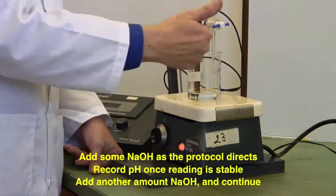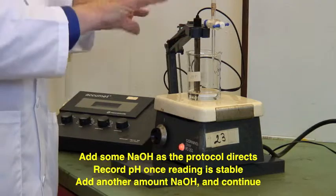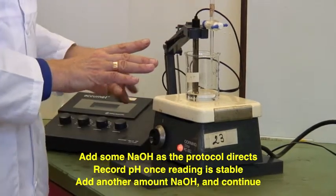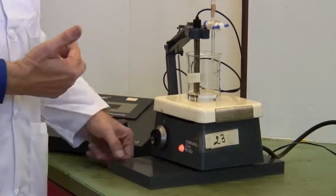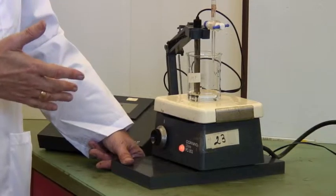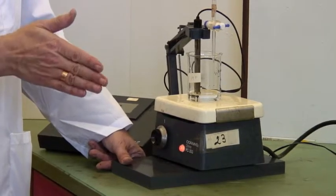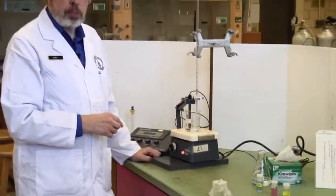Turn on the stirrer and add the first amount. Let it sit for 15 to 30 seconds, then read the pH. Add more, keep stirring, and read the pH again. That's how you perform a pH-monitored titration. You won't see color changes, only numerical changes on the pH meter display.